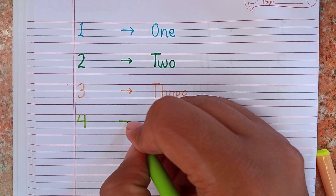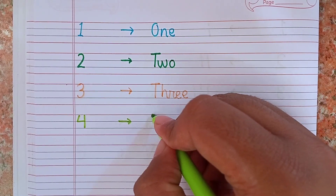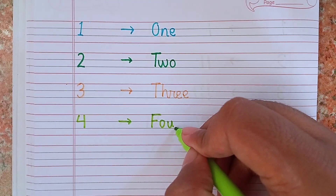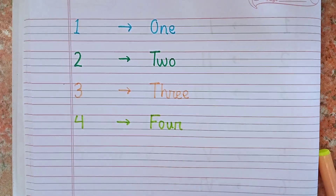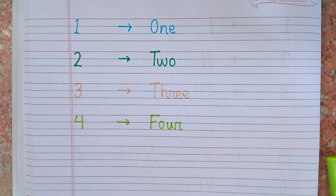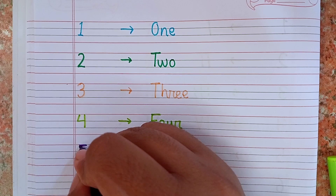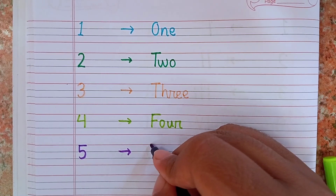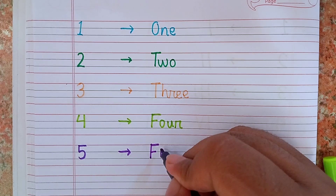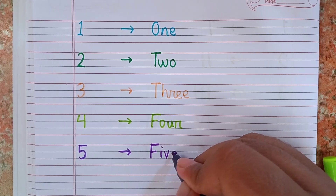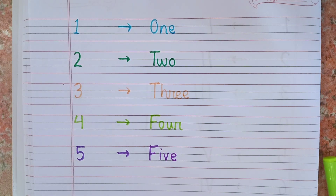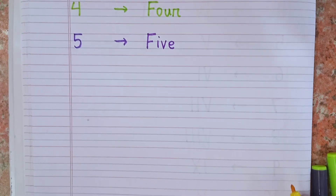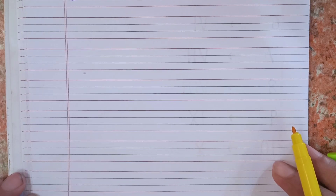After 3, I will write 4. This is 4 and the spelling of 4 is F O U R. Remember the spelling. Now I am writing 5. This is 5: F I V E. Remember the spelling F I V E. After 5, I will write 6.